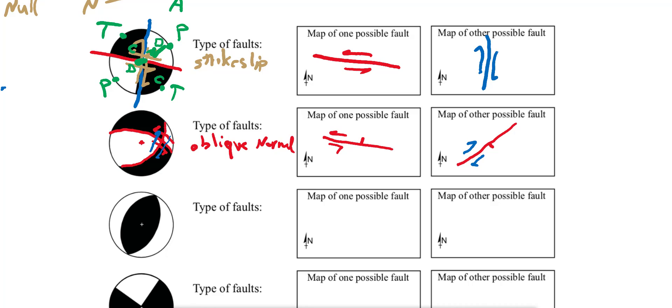We have the type of fault and the maps, so let's place null. The profile plane sits somewhere here, with one axis here and the next one probably somewhere here. Because this area is a dilation zone that's going to be P, and the compressional zone gives us T.